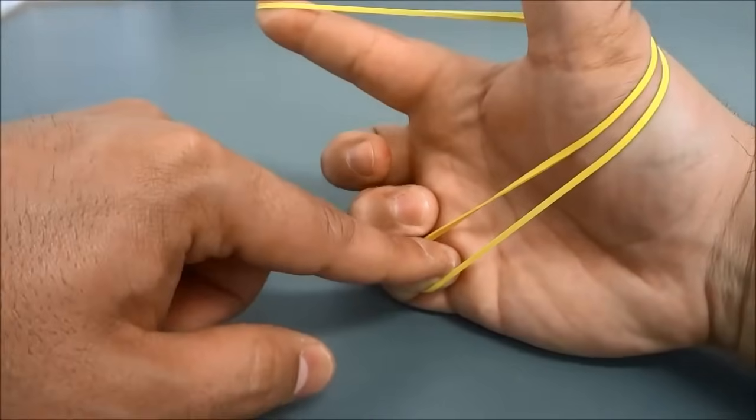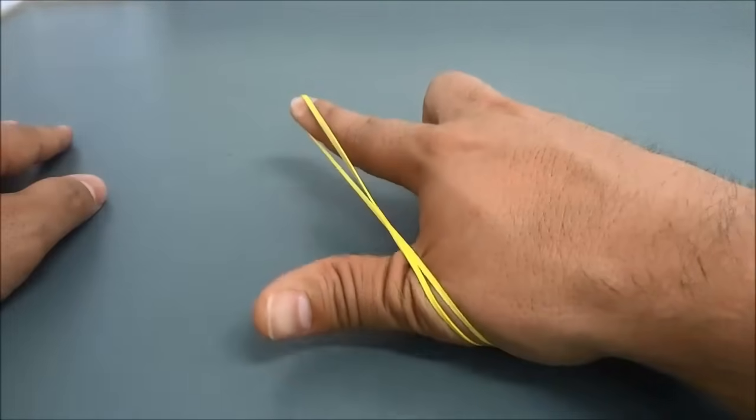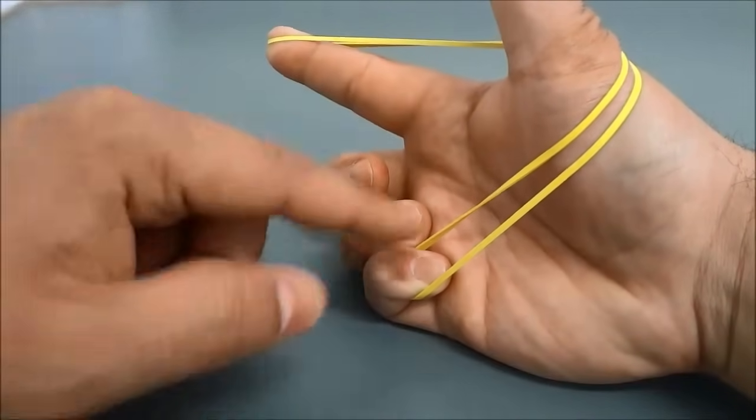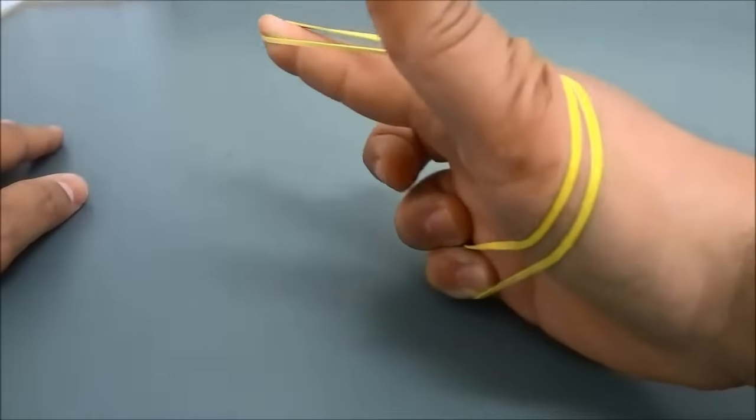As you can see, it's hooked onto my pinky finger and also hooked onto my index finger. All that you have to do to actually shoot the rubber band is release your pinky finger just like this.